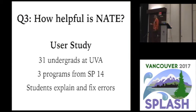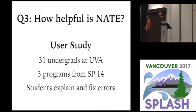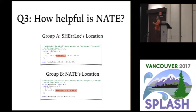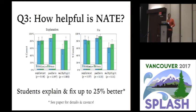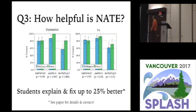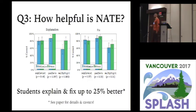Our better error message is actually useful. We did a user study — I'll take this with a big pinch of salt, but we did do it. We rounded up 31 undergraduates at the University of Virginia and took three programs. For each program, we gave them the OCaml error message or the NAT error message — students didn't know which they got. We had external graders evaluate whether students could explain and fix the error. The students explained and fixed errors up to 25% better with NAT. There are lots of details in the paper on why you shouldn't fully believe this, but there's some evidence suggesting that better error messages are in fact helpful.